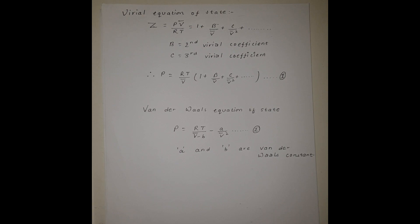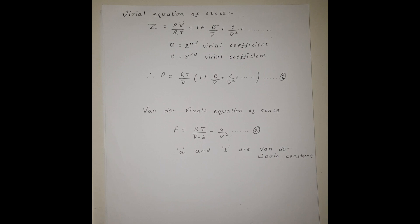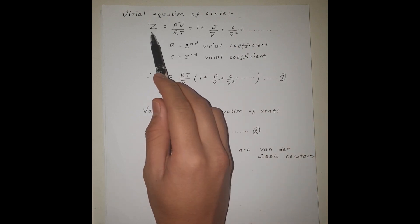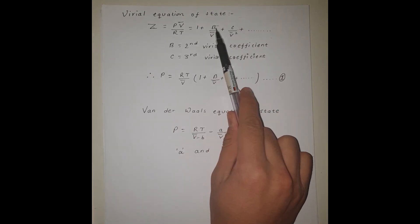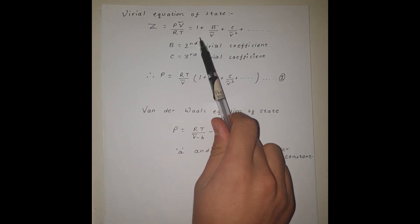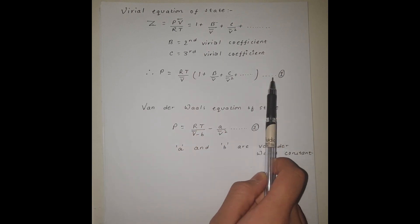The virial equation of state is useful for calculating chemical properties in the gas phase, which can be derived from mechanics and is given by an infinite series in the molar volume, denoted by V with an overline. The virial equation of state is a sum of an infinite sequence, where Z is the compressibility factor, equal to this infinite series, where B and C are the second and third virial coefficients — the values we want to estimate using the Van der Waals equation. This infinite series can be rearranged, and that will be our equation 1.